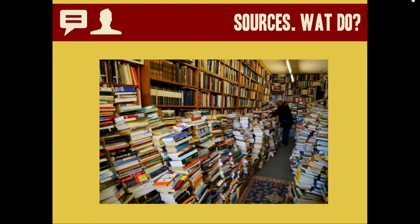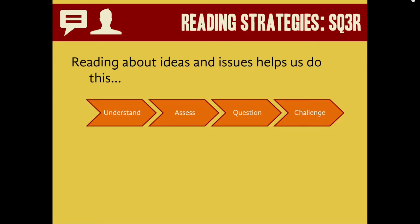So what do we do when we have a bunch of books or a bunch of articles? How do we get started with them? How do we read them in a way that's productive? How do we work smarter, not harder? There's a reading strategy called SQ3R that you may have heard of. Reading about ideas helps us to understand them, to assess content, to then question it, and maybe even to challenge it or add on to it, or to make something new out of it.